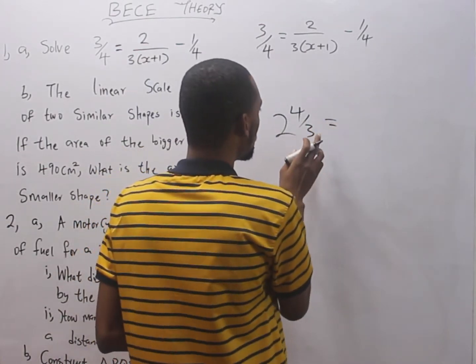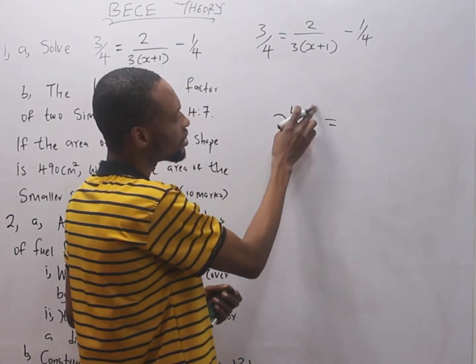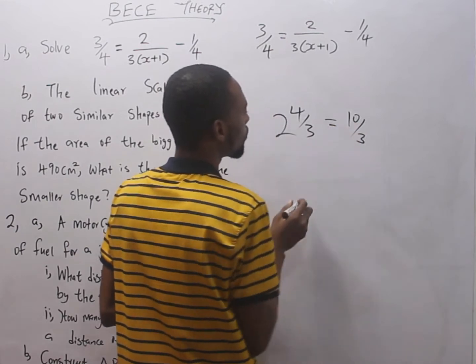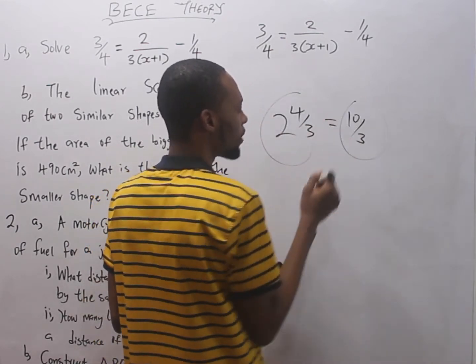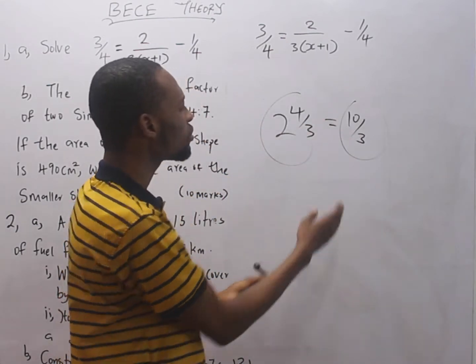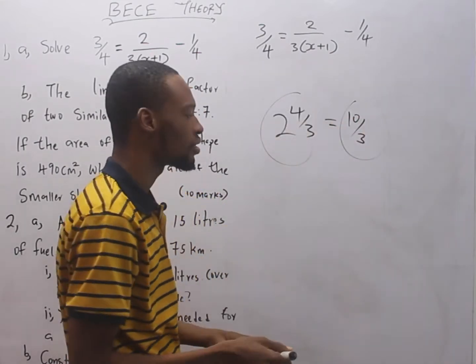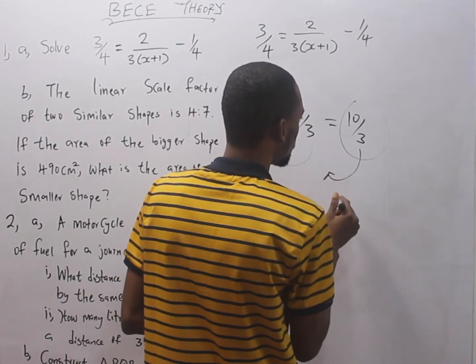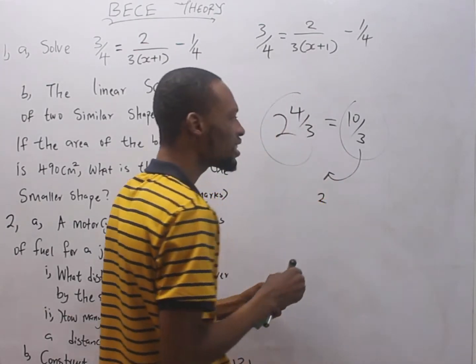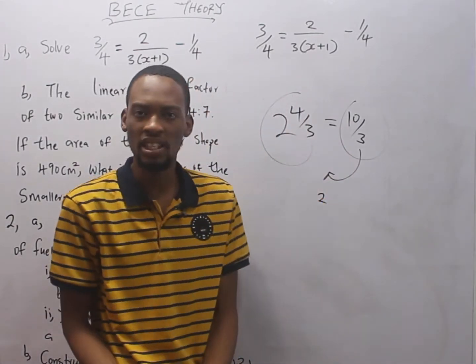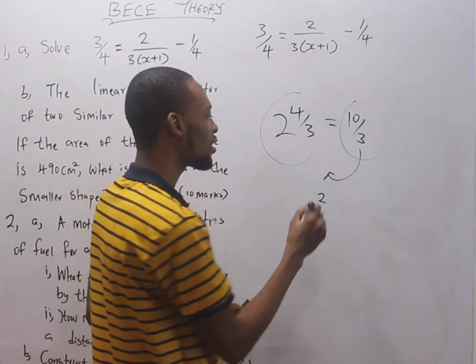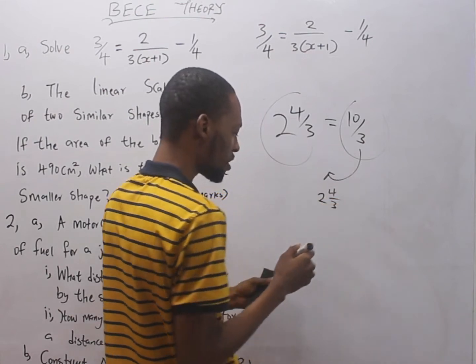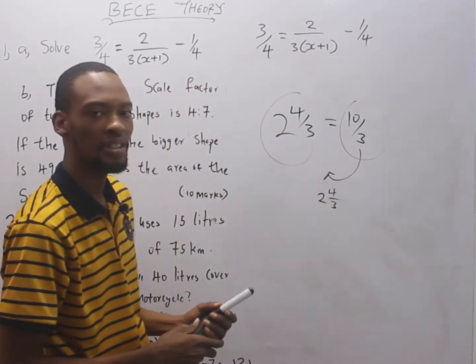If you have something like 2 whole number 4 over 3, this is a mixed fraction. Whole number and fraction. To resolve mixed fraction, you simply say this times this plus this all over this. That is how you change mixed fractions to improper fractions. In this case, 3 times 2 is 6, 6 plus 4 is 10. So this is 10 over 3. That's the conversion method.